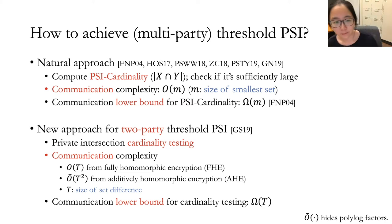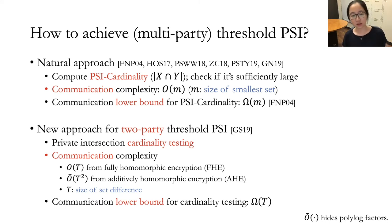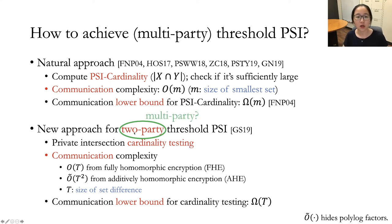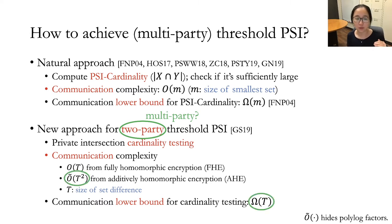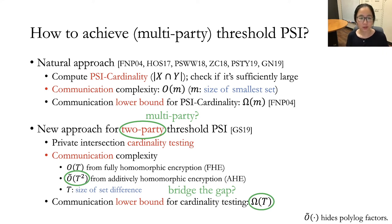In this work, we ask two questions. The first question is whether we can extend this new approach for two-party threshold PSI to the multi-party case. And second, we notice there's a gap between the upper bound and lower bound for threshold PSI from additively homomorphic encryption. So can we bridge this gap? Can we achieve better communication complexity from assumptions weaker than FHE?